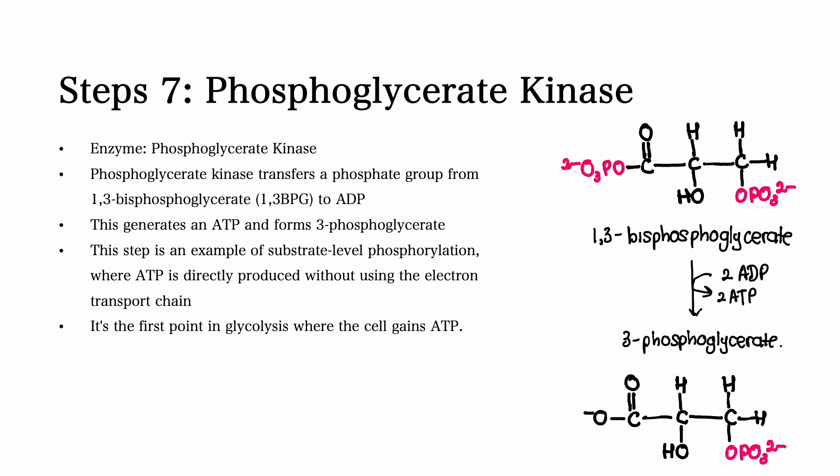Step number seven. In step number seven, the main enzyme involved is phosphoglycerate kinase. Phosphoglycerate kinase transfers a phosphate group from 1,3-bisphosphoglycerate, also known as 1,3-BPG, to ADP, generating ATP and forming 3-phosphoglycerate. This step is an example of substrate-level phosphorylation, where ATP is directly produced without using the electron transport chain. It's the first point in glycolysis where the cell gains ATP.